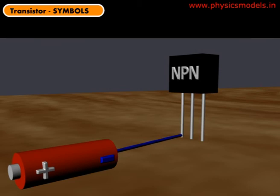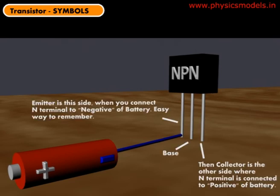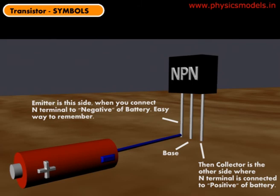Now you start connecting batteries. Take any one N and connect it to the negative of a battery — that's easy to remember, N for negative. The moment you connect one N to negative, that side, that terminal becomes the emitter of the transistor.